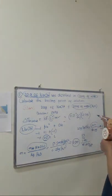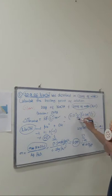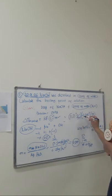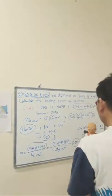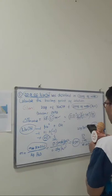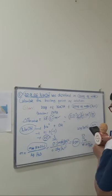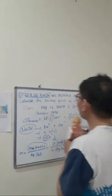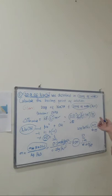Times the van't Hoff factor i = 2, which we already have. Canceling the molal units: using the scientific calculator, 2.5 times 2 times 0.51 equals 2.55. So delta T_b equals 2.55 degrees Celsius.